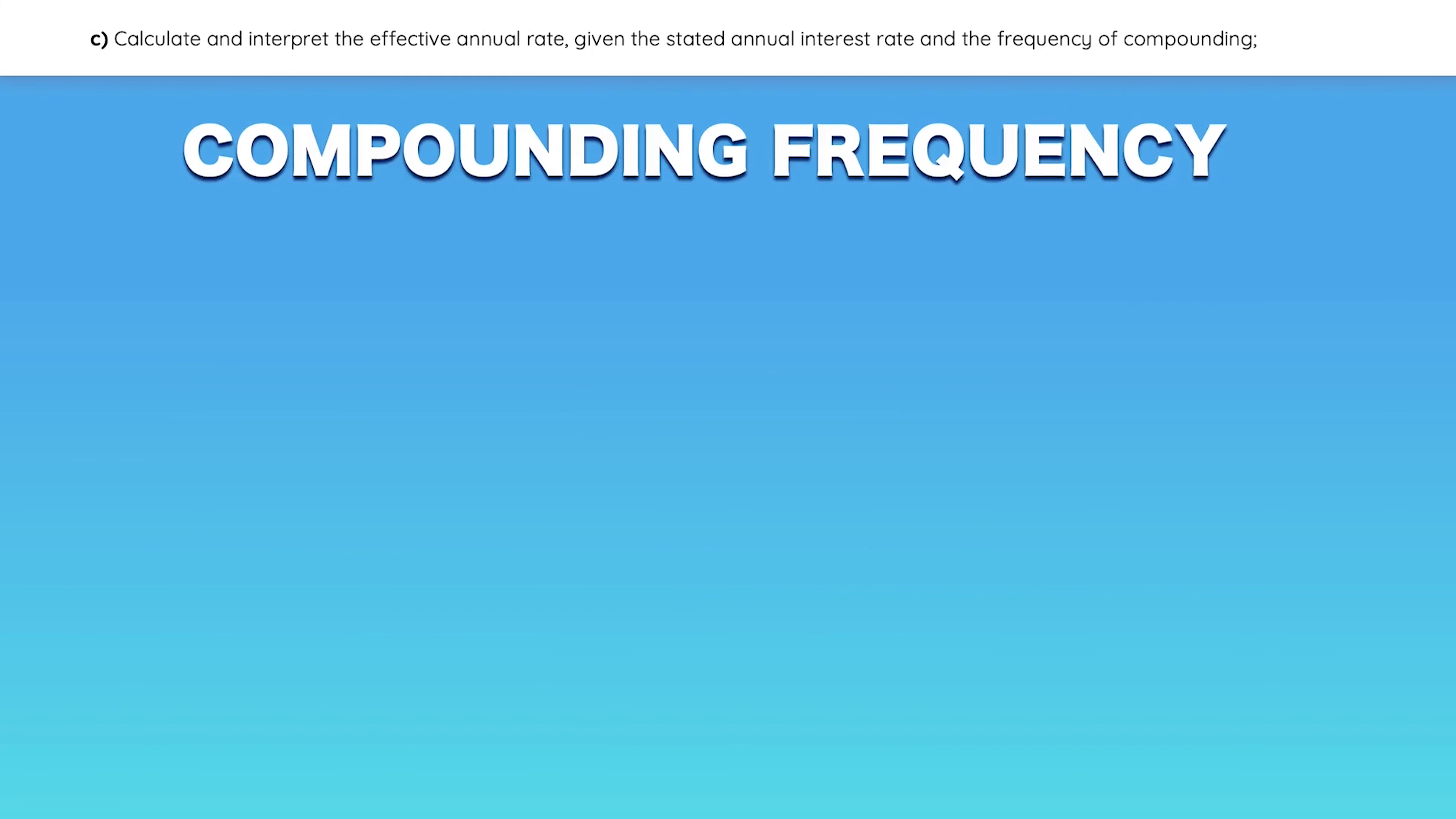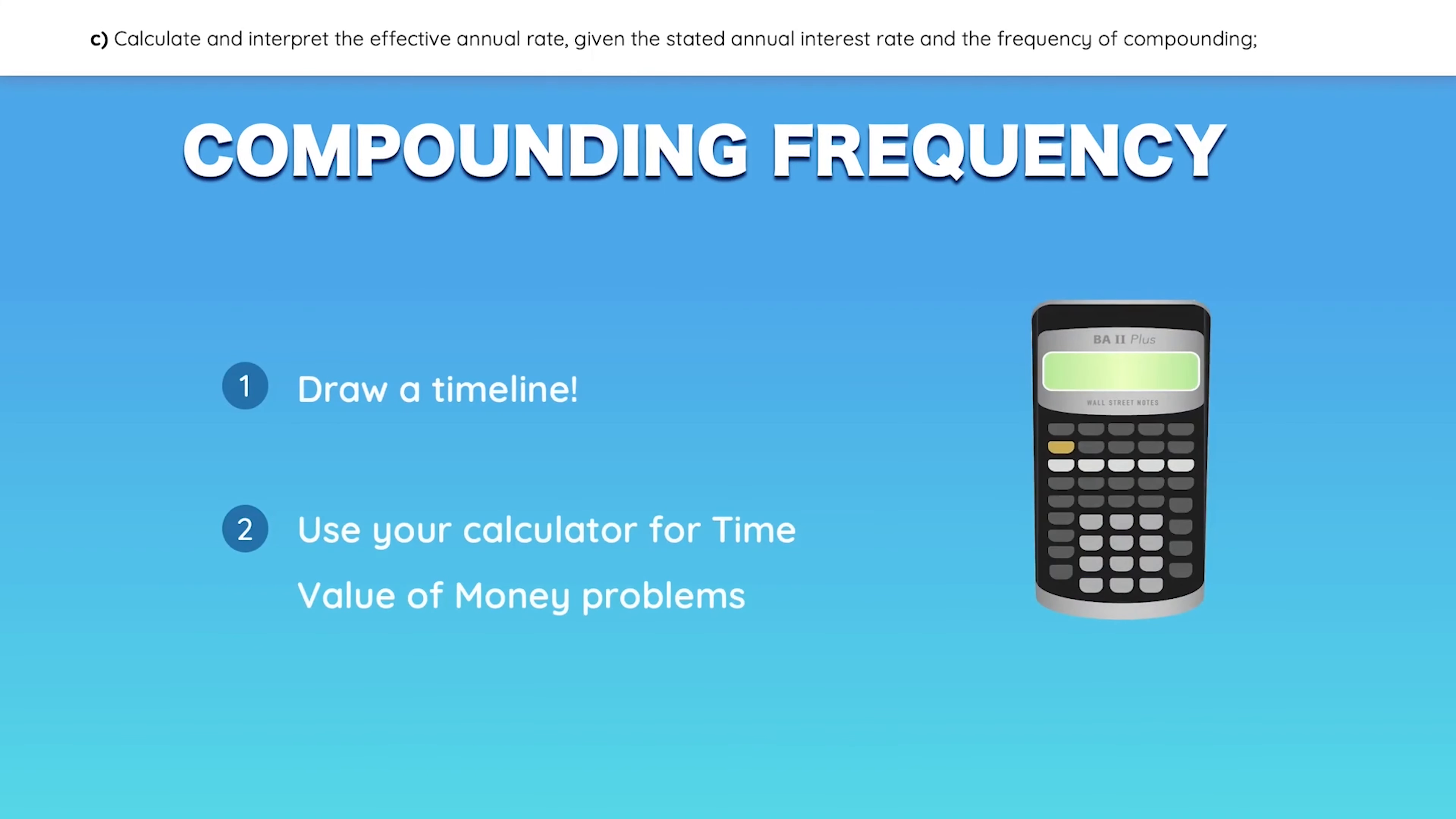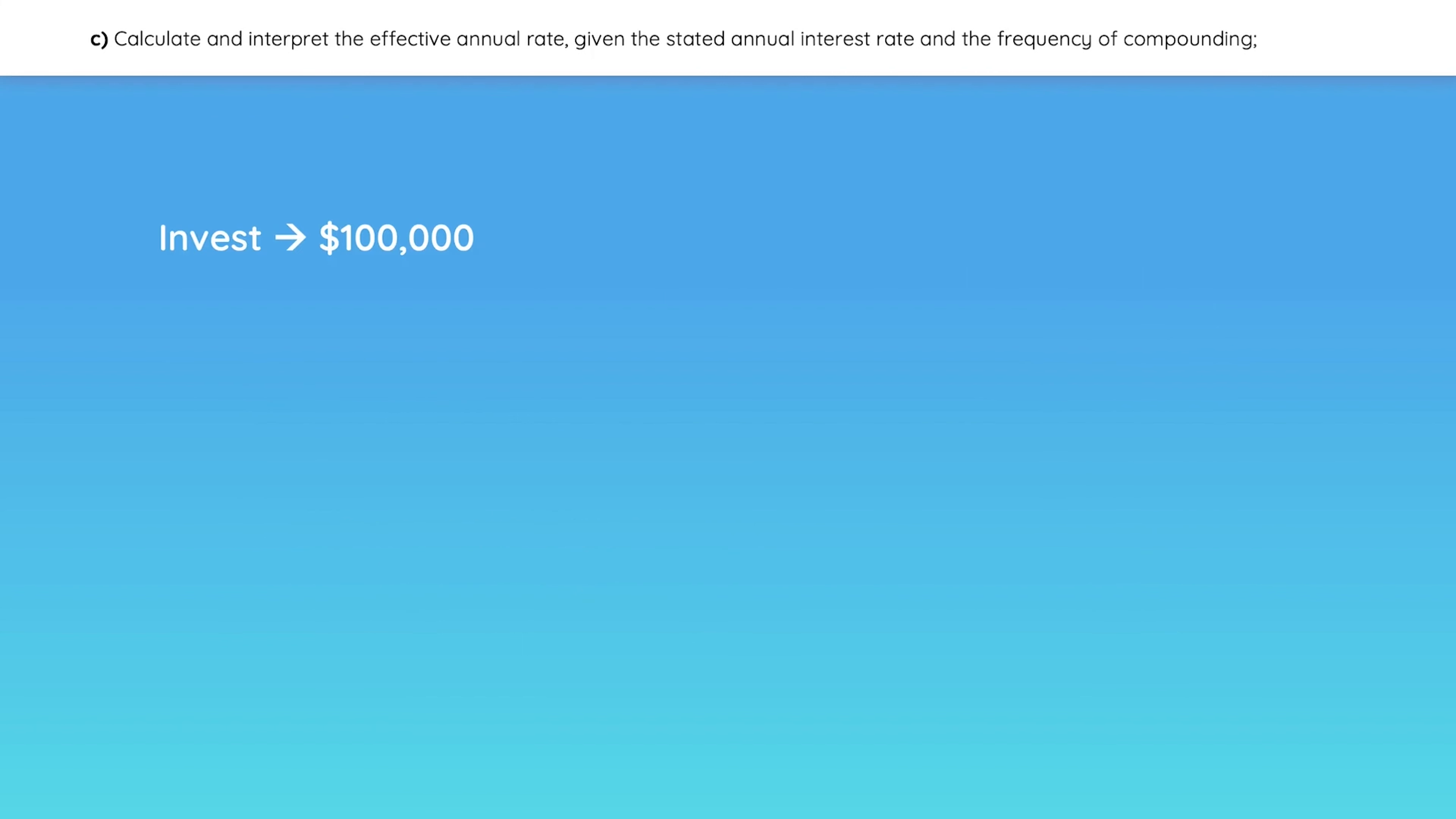The frequency of compounding is where it gets a little tricky. One of the best things you can do in time value of money questions is to draw a timeline and use your calculator to save time. So let's say you invest $100,000 in a 4-year security with an annual rate of 10%, compounded quarterly. How much will you have at the end of 4 years?